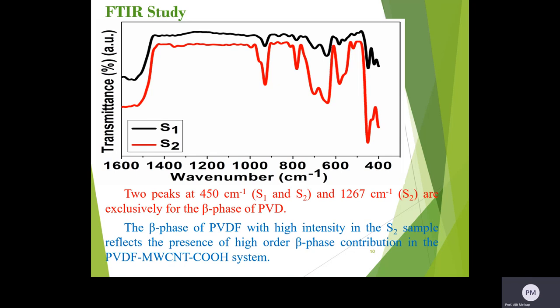The analysis of the FTIR peak suggests the existence of the alpha, beta, and gamma phases of the PVDF in the film.